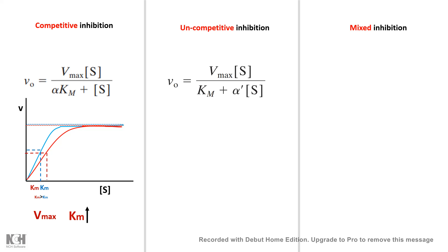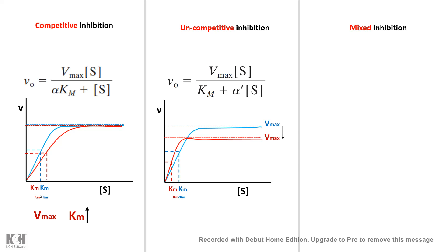For uncompetitive inhibition, the Michaelis-Menten equation looks like: V0 = Vmax·[S] / (Km + α'·[S]), where α' (alpha-dash) is another rate constant.